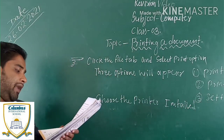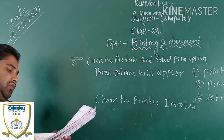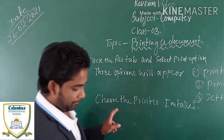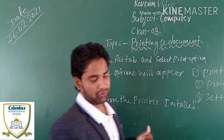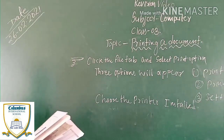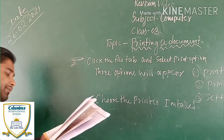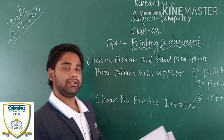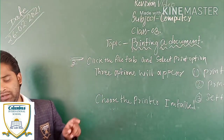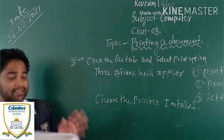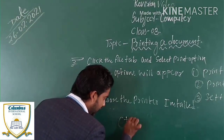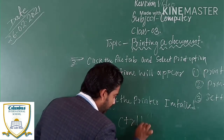Select the page range and number of copies to be printed. Then click on the Print button to print the document. Or you can use the shortcut — press Ctrl+P to print the document.